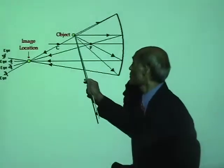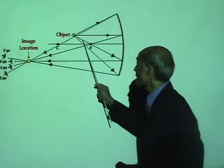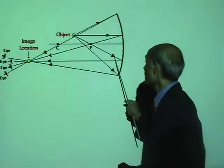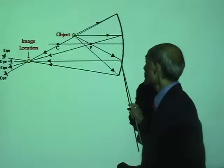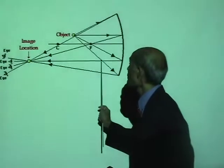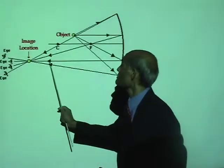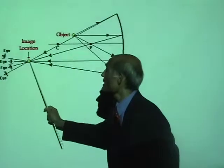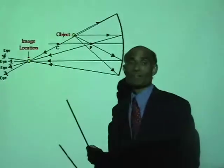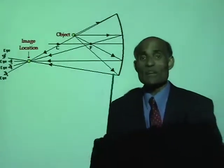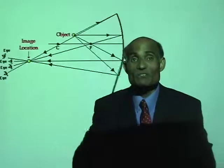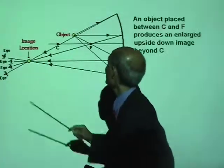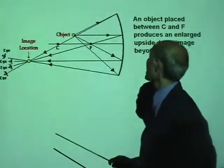And then if you now take a ray that passes through the principal focus, after reflection from the mirror it will go parallel to the principal axis. Look at the point where they meet — the image is formed at the point where the reflected rays meet. So here we have the location of the image.